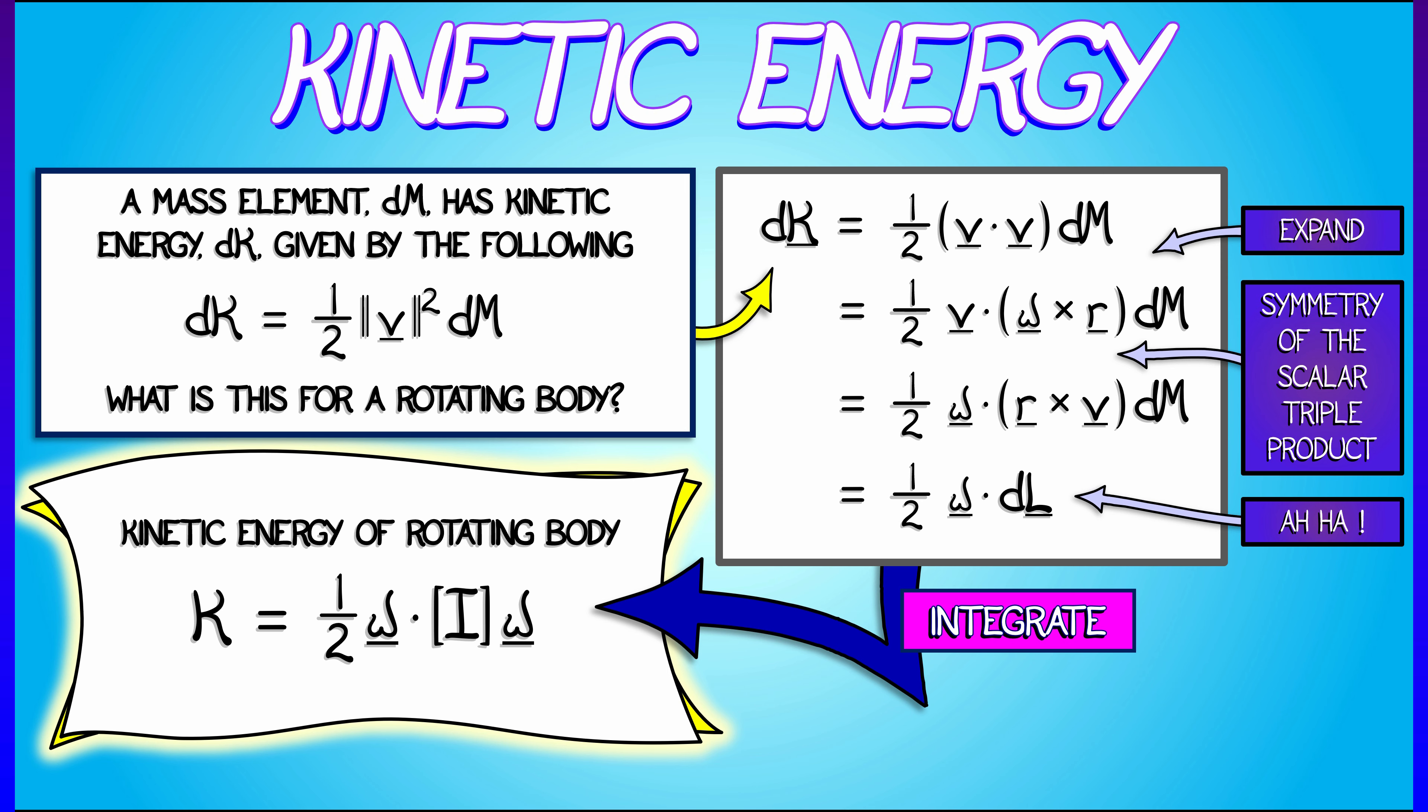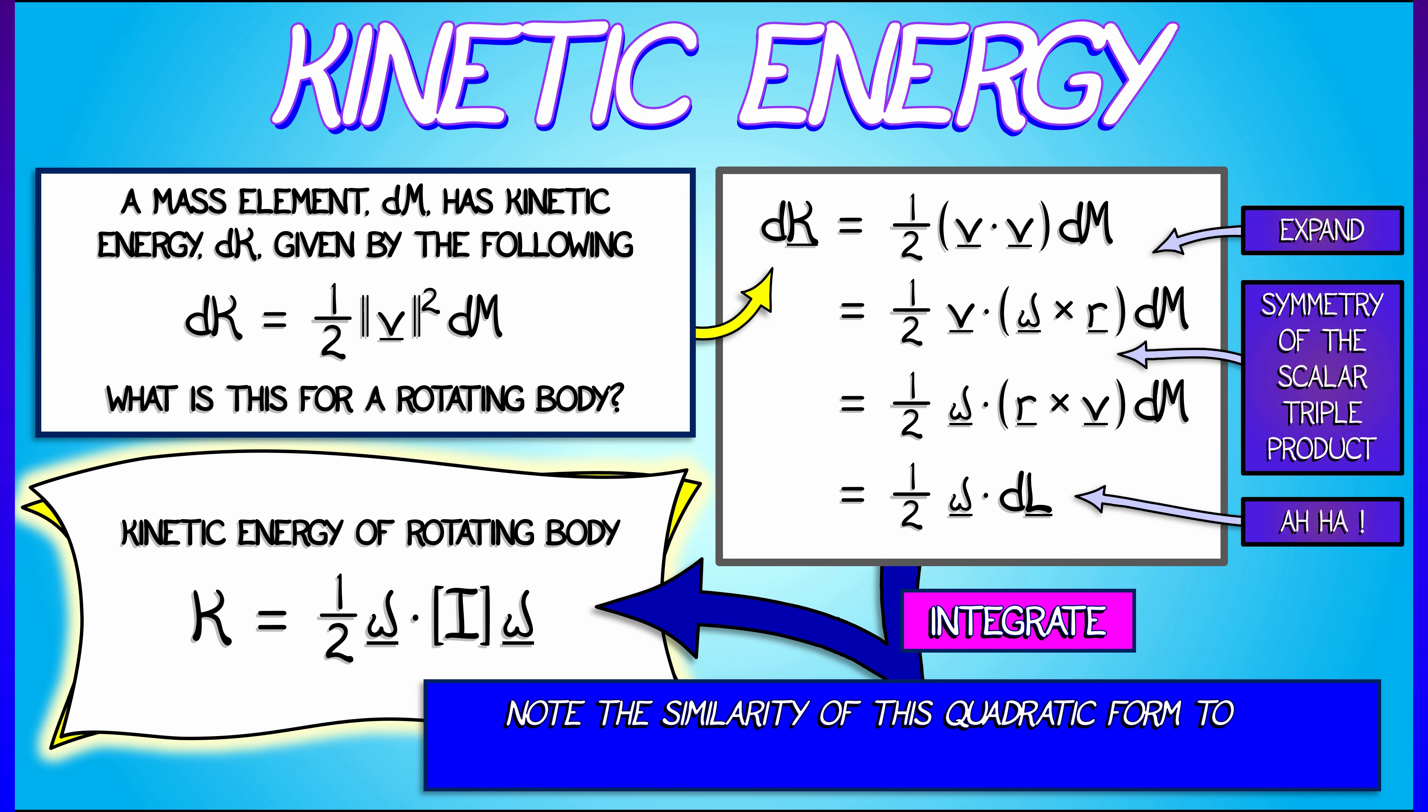This is similar to the one half mv squared that we have from basic physics, but now we're using angular velocity omega, that's a vector, and we're using the angular mass i, the inertia matrix, as a quadratic form for computing this kinetic energy.